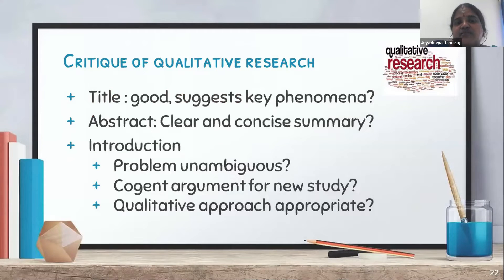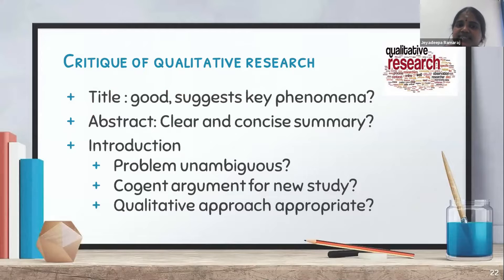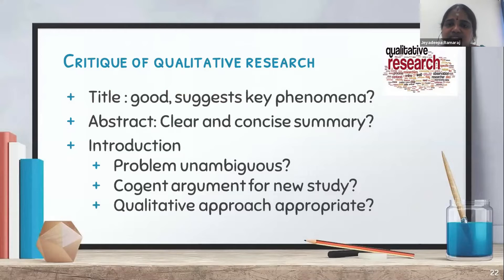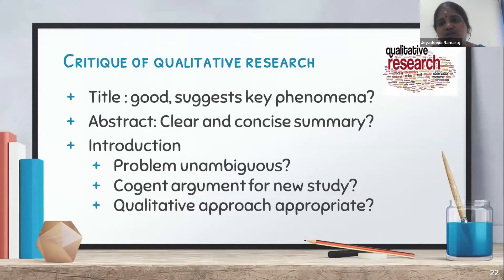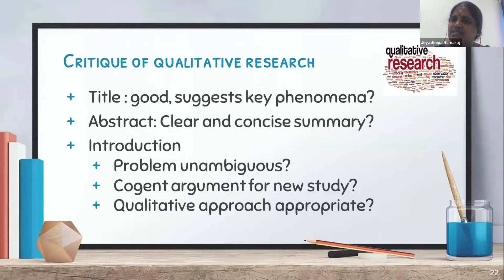Next is the critique of a qualitative research study. Similarly, we go by the steps in the research process. First is the title — whether it suggests the key phenomena of interest, what qualitative research approaches are used, and whether the title justifies the qualitative approach. Then comes the abstract — whether it is a clear, concise summary. Similar to the quantitative study, the abstract should be clear and people should easily understand what it talks about.